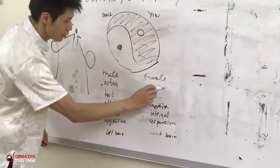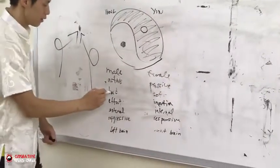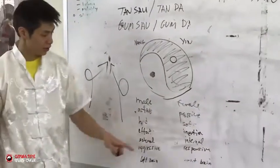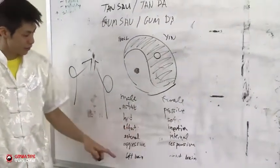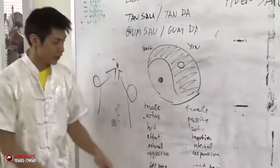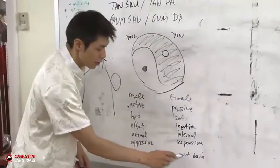And then there's active, passive, hard and soft, effort, inertia, external, internal, aggressive, responsive, left brain which is logic, reasoning, and right brain which is creativity and emotions, things like that.